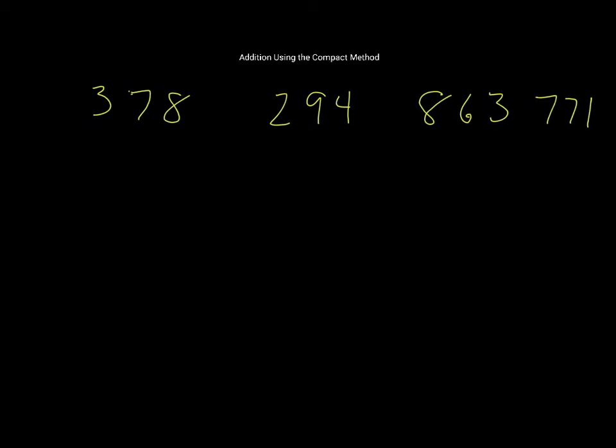So let's first of all take 378 and 863. The first thing you need to do with the compact method is decide which order you're going to put the numbers in. If we're doing addition, I always like to put the large number on top, which helps me remember when I do subtraction that the big number goes on top.